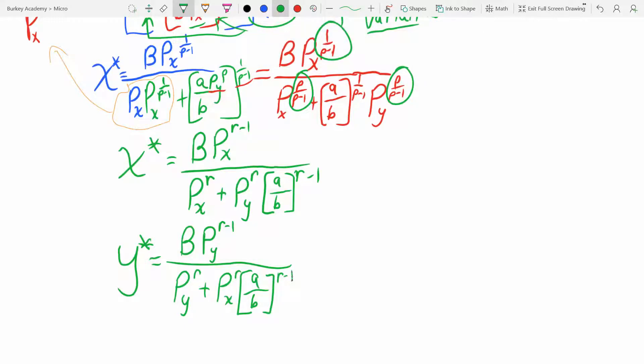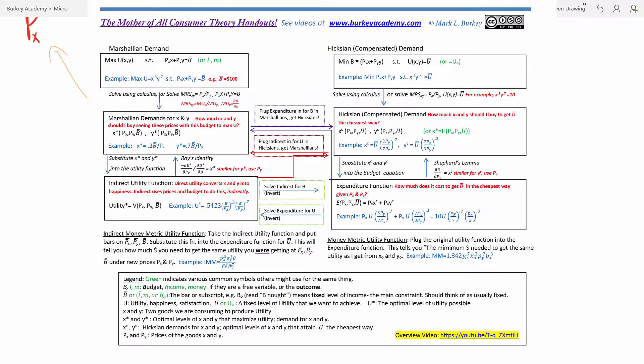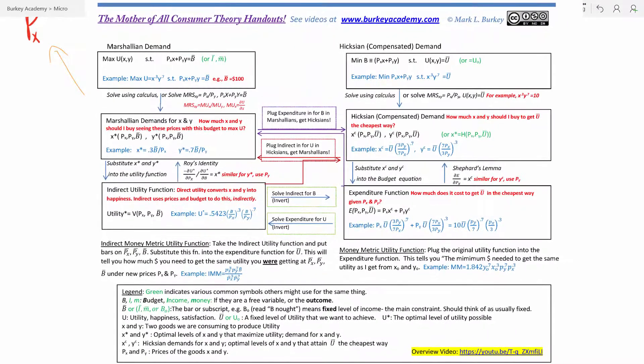Okay, last thing. The pain is almost over. Let me just do one other step with this. The other step that most textbooks and professors want you to do once you get these Marshallian demands is let's go ahead and get an indirect utility function.